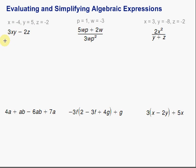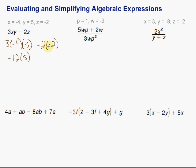For this first one, we've got 3 times x, which is negative 4, times y, which is 5, minus 2 times z, which is negative 2. Then we follow the order of operations — multiplication first. So we have 3 times negative 4, which gives us negative 12, times 5. And negative 2 times negative 2 gives us plus 4. Finally, negative 12 times 5 is negative 60, plus 4, which gives us negative 56.